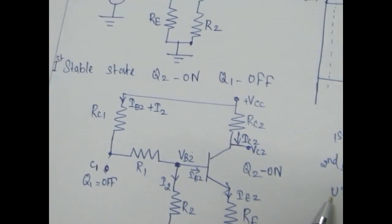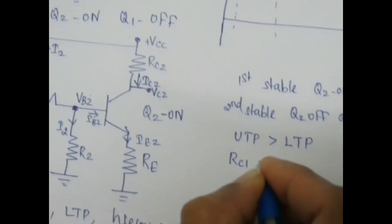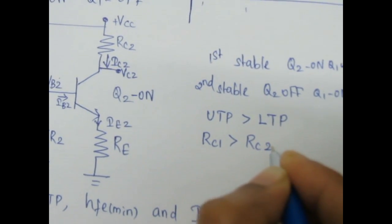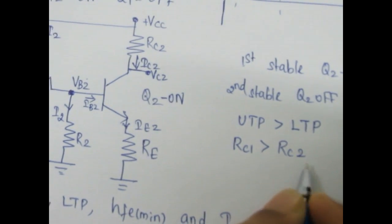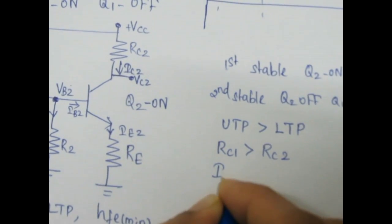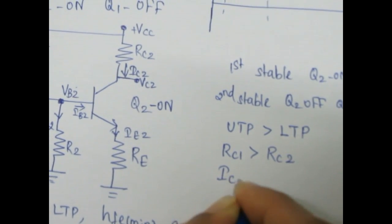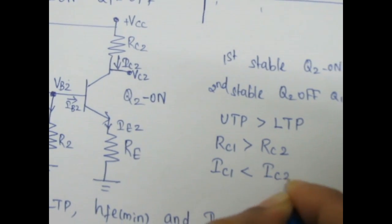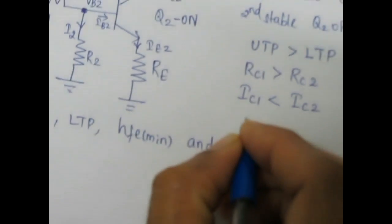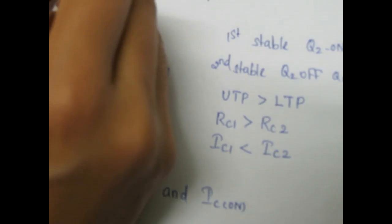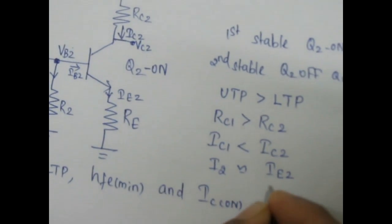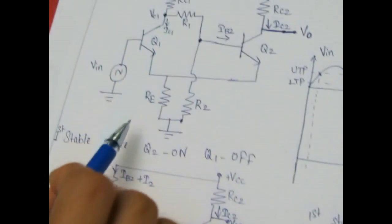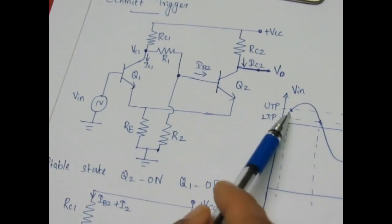To design a Schmitt trigger we assume the RC1 resistor value is greater than RC2 resistor value. If RC1 is greater than RC2, then the current flowing through RC1 will be less than the current flowing through RC2. We also assume that if a transistor is on, the current flowing through R2 is approximately equal to the on-transistor emitter current divided by 10. The Schmitt trigger is also called a sine-to-square wave converter.